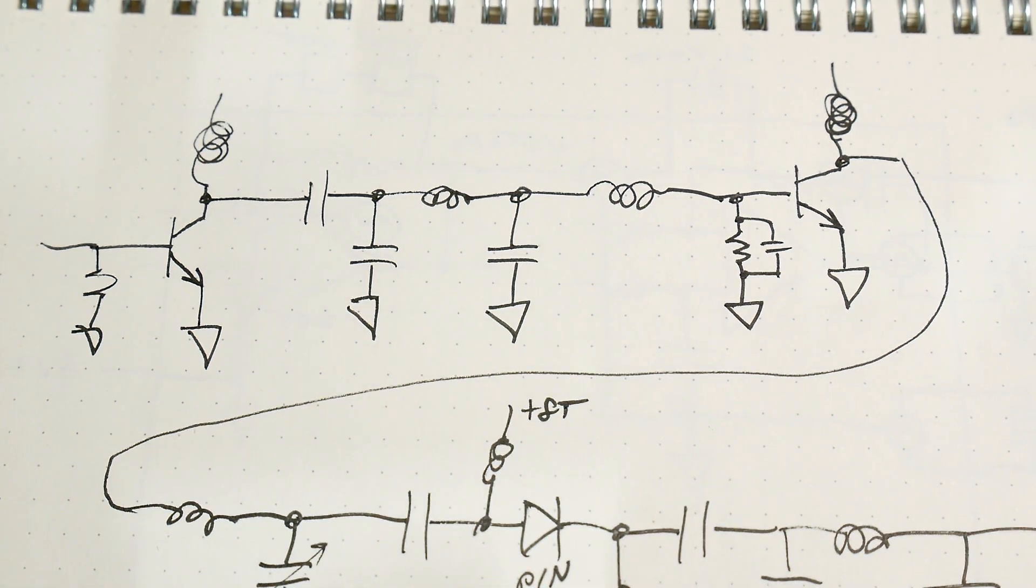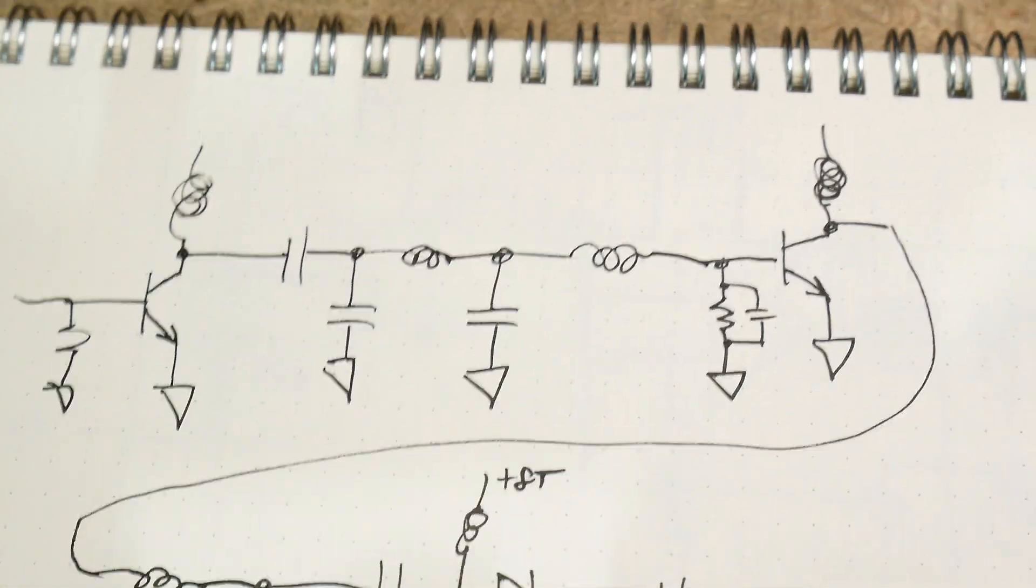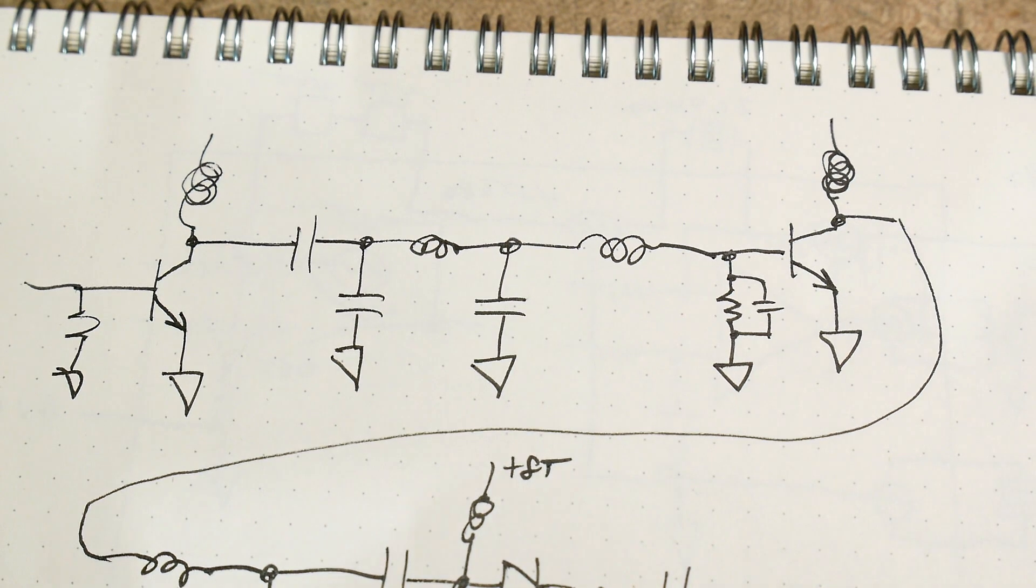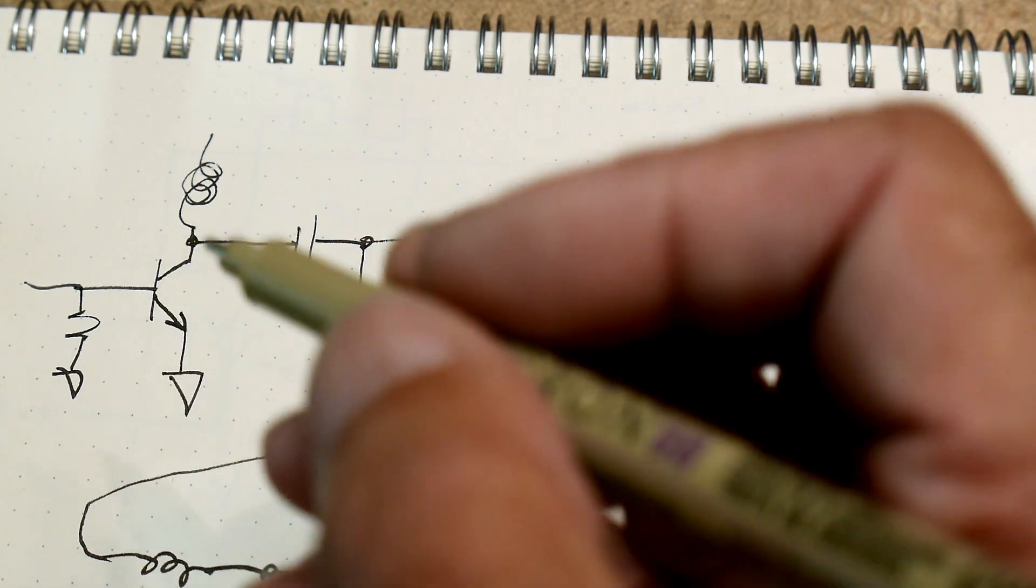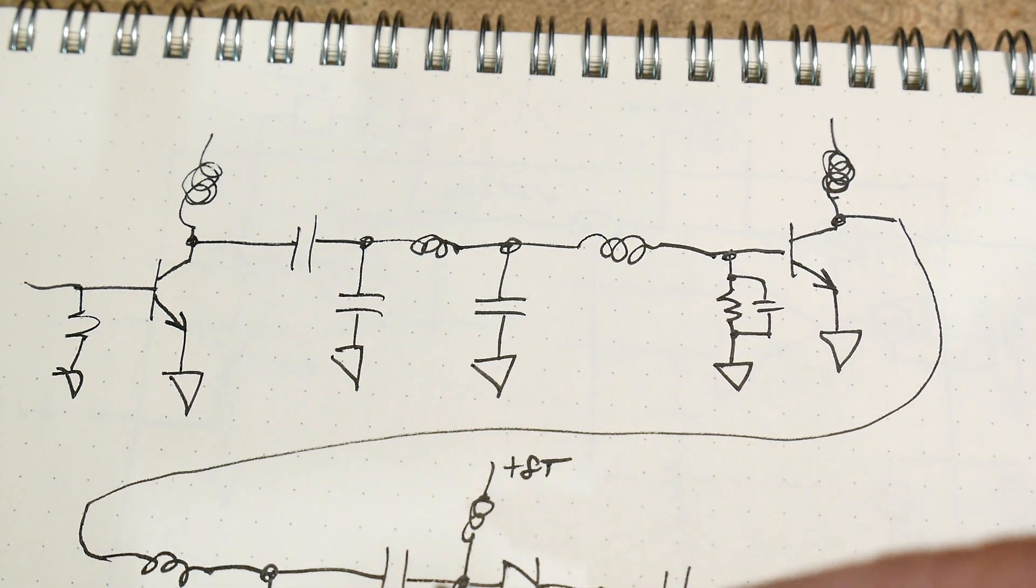You hear about class A, class B, class AB, that kind of thing. I believe these are called class C. Correct me if I'm wrong, but I believe these are class C, which just means that they're hard on and they don't go up and down. They're just going full blast.